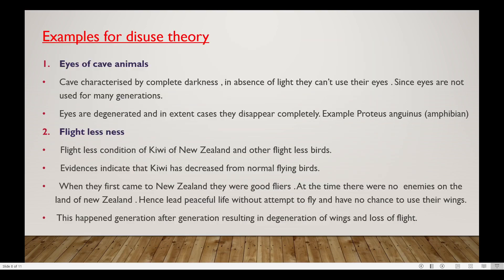Next are examples of the disuse theory. The first example is the eyes of cave animals. Caves are characterized by complete darkness. In the absence of light, the animals cannot use their eyes. Since eyes are not used for many generations, they degenerate and in extreme cases disappear completely. An example is Proteus anguinus, an amphibian.